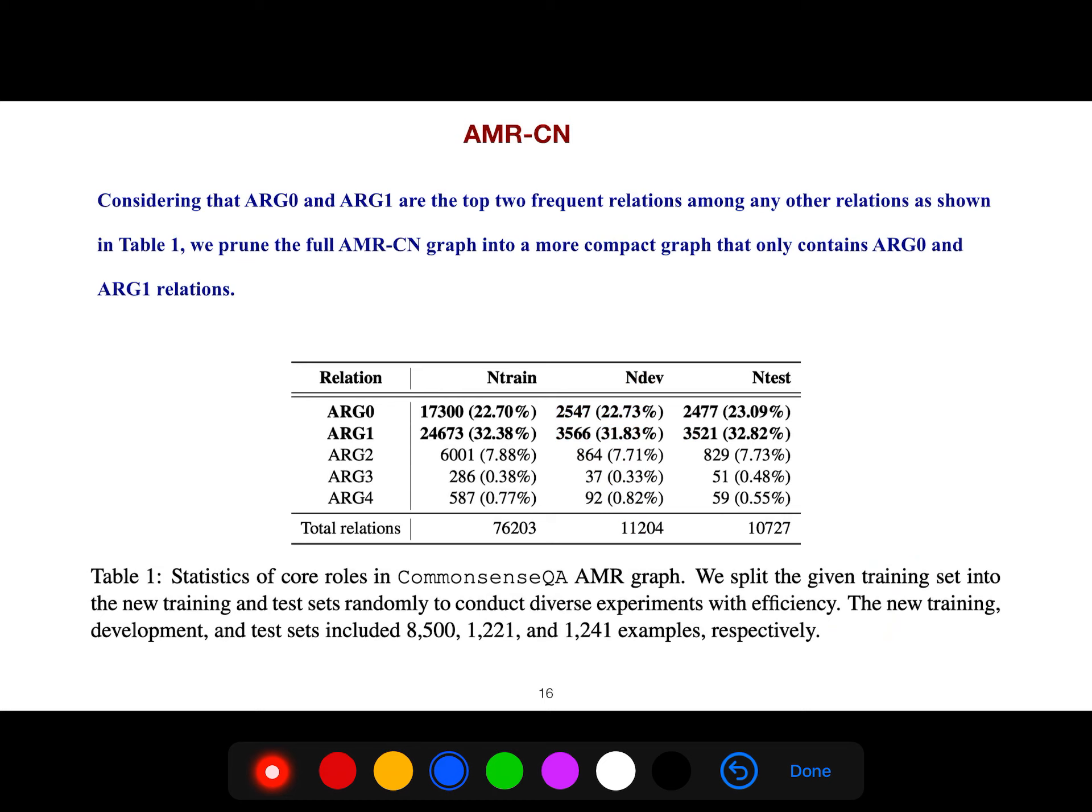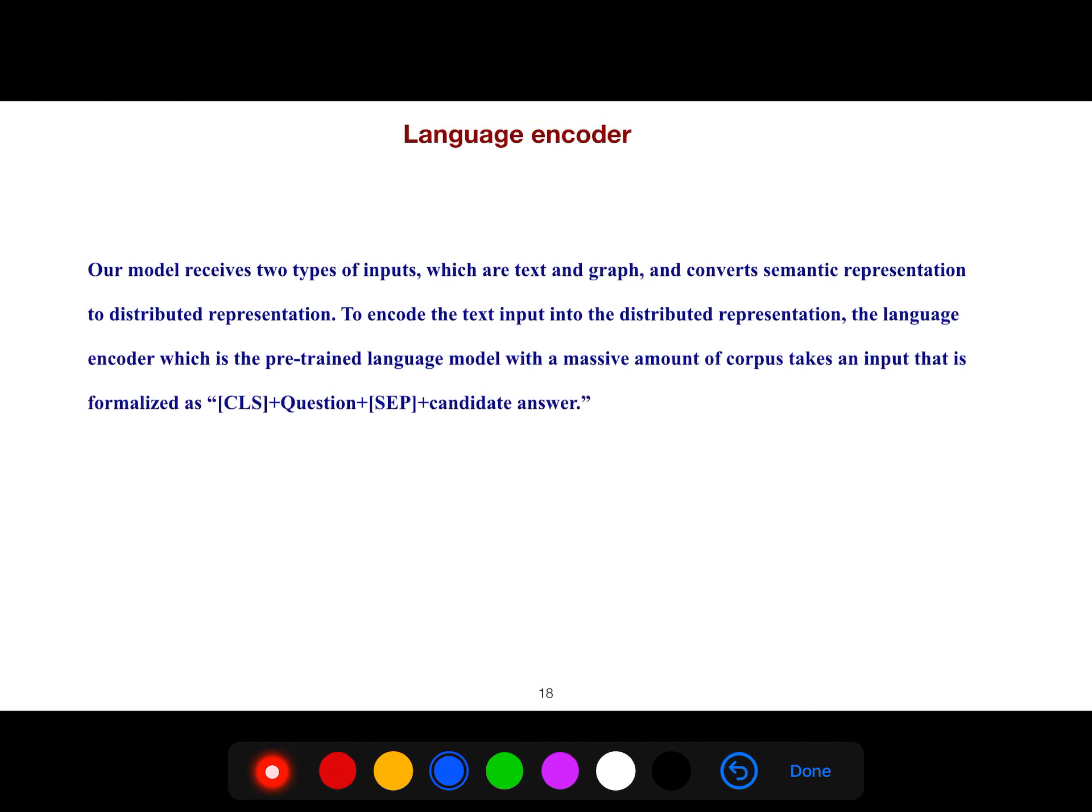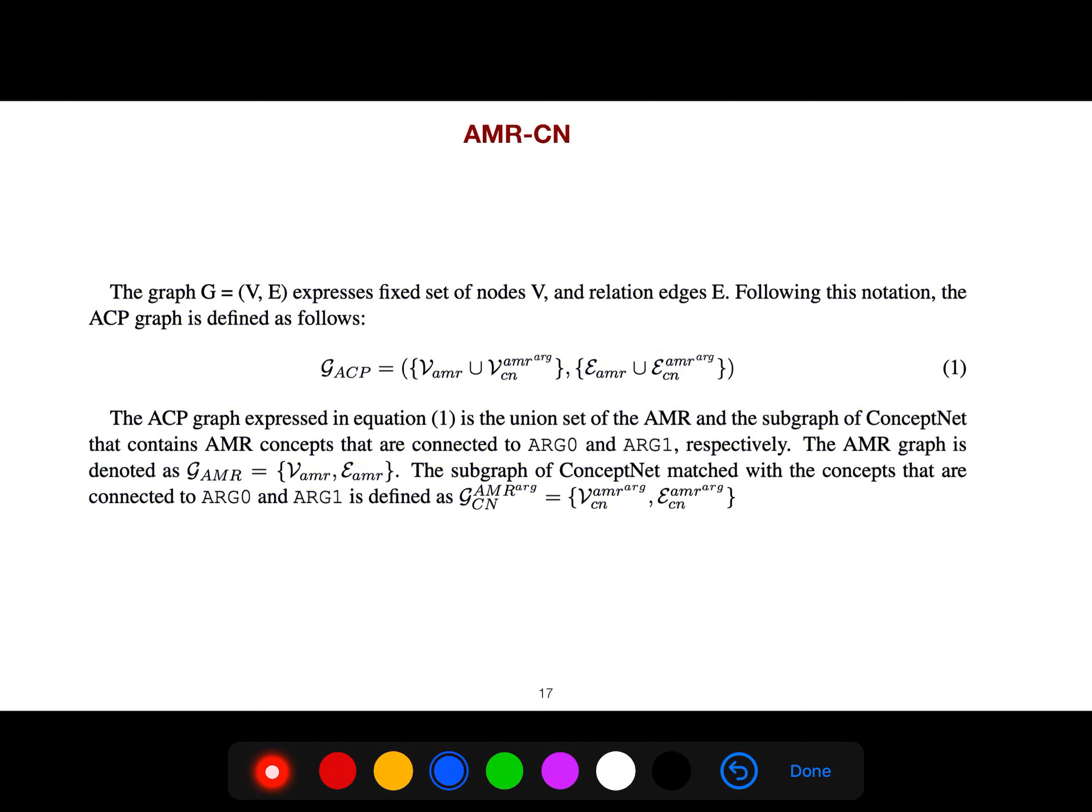And then these are the relations that you extract. Arg-0 and Arg-1 are top two frequent relations because in most sentences you just need the subject and object.